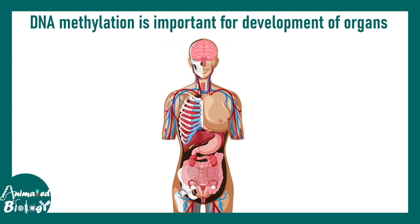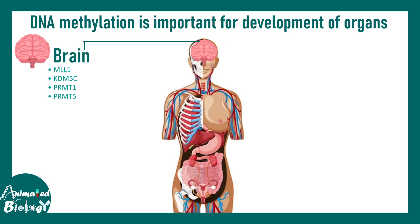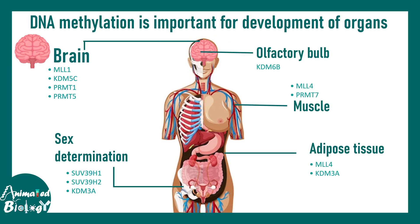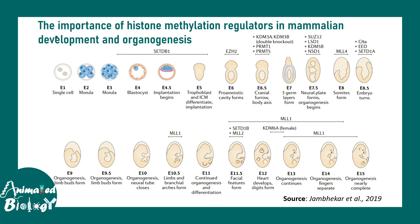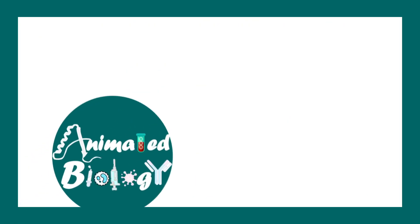Just as DNA methylation was important in organ development, histone modification is also important for organ development. From brain to olfactory bulb to muscle to adipose tissue, different kinds of DNA and histone methylation modifiers are present. Similarly, histone methylation can also fluctuate during embryonic development, leading to different outcomes. I hope this video gives you a deeper understanding about histone and DNA methylation — stay tuned for more.